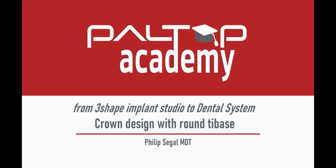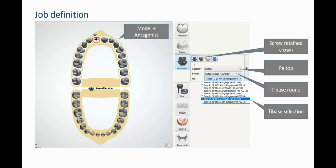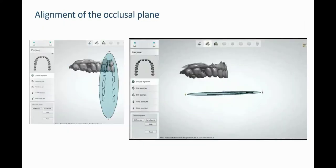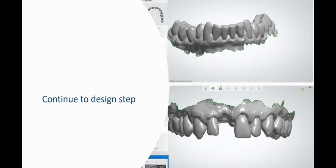Now that the implant planning is complete, we can export the planning file from Implant Studio to Dental System. Complete the job definition — include the model, an antagonist, and screw-retained crown. Open up the window for the Paltop library and choose tie base, then choose your tie base selection. Complete material definition — in this case PMMA is chosen for a temporary crown. Set the occlusal plane. Once you have set the occlusal plane, you may continue on to crown design.